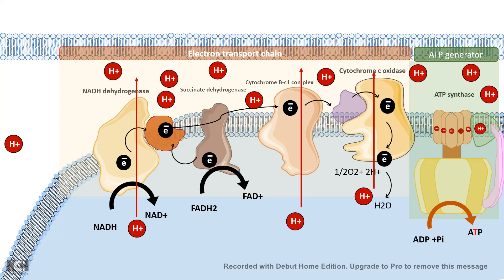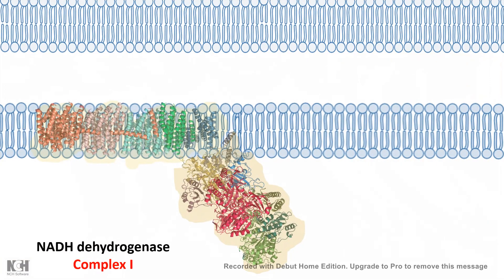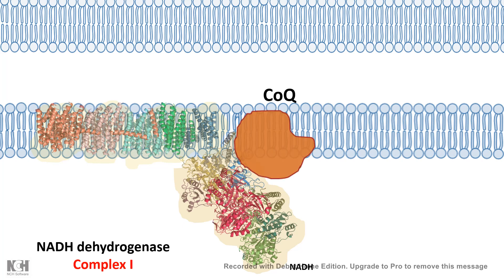ATP is the currency for the cell. The electron transport chain is a relay system — relaying electrons among complexes and ultimately reducing oxygen to water. The ATP generation machinery is dependent on the electron transport chain because the ETC builds the proton gradient. Now let's look at this in more detail. Complex 1, also known as NADH dehydrogenase, catalyzes an oxidation reaction where NADH is oxidized to NAD+, and the removed electron moves through complex 1 and ultimately transfers to coenzyme Q.